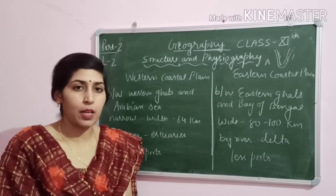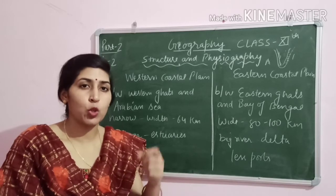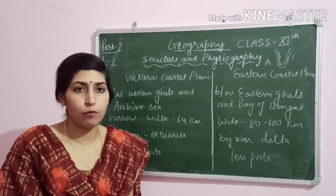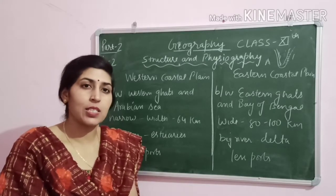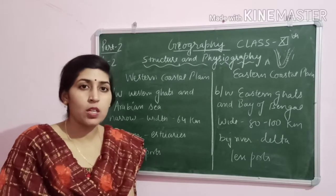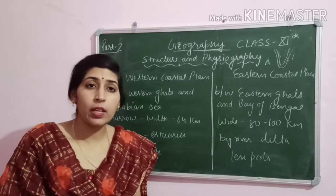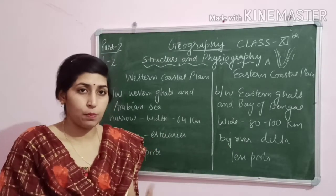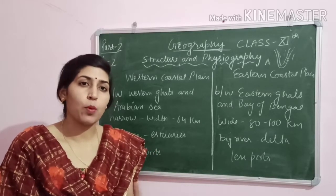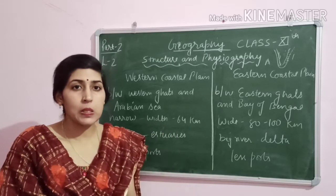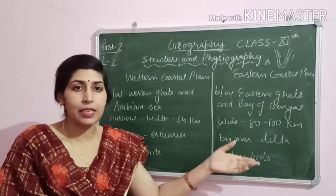In the western coastal plain, short rivers like the Narmada and Tapi flow directly into the Arabian Sea, forming estuaries because they carry less sediment and do not build deltas. In contrast, rivers on the eastern side — such as the Godavari, Krishna, and Mahanadi — follow a much longer course, carry large amounts of sediment, and deposit it on the eastern coastal plain, forming large deltas.